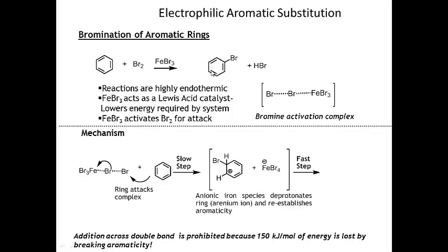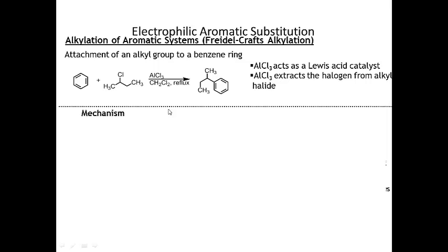What you want to do immediately is reestablish the aromaticity and get those three fully conjugated double bonds back into the ring. The iron bromide acts as a base and deprotonates here, and then this pair of electrons comes in to reestablish aromaticity, giving the brominated product plus HBr. The catalyst is then regenerated and can go back to do the reaction again.